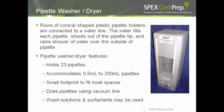Frustrated by remnant contamination in pipettes even after thorough cleaning, our chemist designed a unique pipette washer. Rows of conical-shaped plastic pipette holders are connected to a water line. Water fills each pipette, shoots out of the pipette tip, and drains a shower of water over the outside. Because water gushes out with force, it washes away all impurities sticking to the walls. The washer can hold 23 pipettes, accommodate 0.5 ml to 200 ml pipettes, has a small footprint, can also dry pipettes by connecting to a vacuum line, and you can enhance washing by adding wash solutions or surfactants.